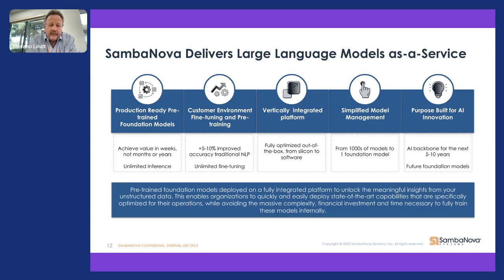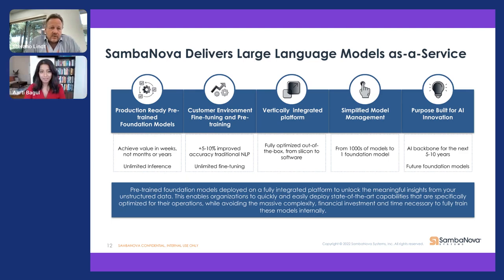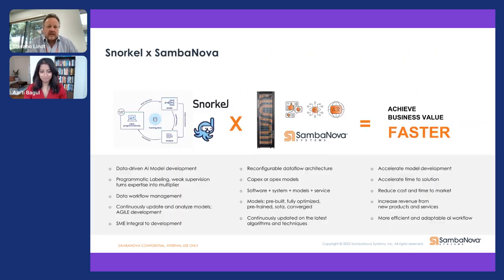To summarize: we have ready-to-go pre-trained models that can be customized for each customer. We can help with fine-tuning, do some of the pre-training, and simplify the management of the models depending on volume. We really help organizations build AI into their processes and drive innovation. A lot of talks today discussed how data is critical in making these models useful — that's where our partnership with Snorkel comes in, to help ensure that the data is properly labeled and annotated so we can effectively leverage customer data in our models and provide value in a short amount of time.